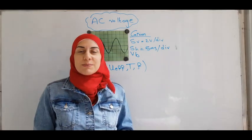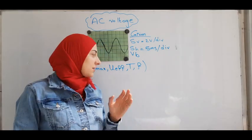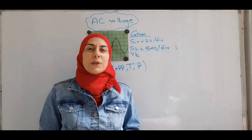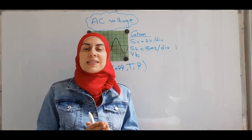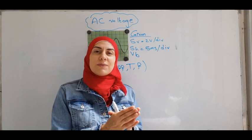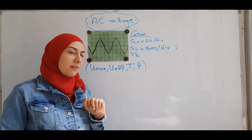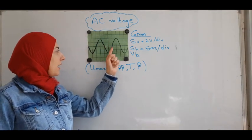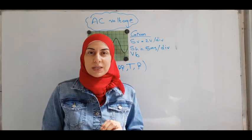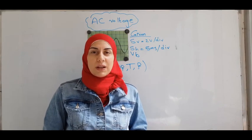U maximum is the maximum value of the voltage, whereas U effective, if you want to replace this AC voltage by another DC voltage that will do the same effect, then you will bring a DC voltage that has U effective. The period T is the time it takes to cover one cycle, and the frequency F is the number of cycles per one second. So how do we get these values?